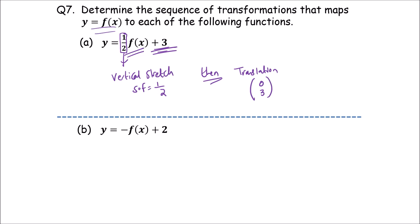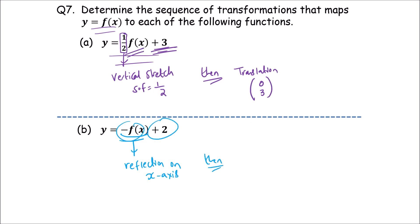Part B of question C: there are two vertical transformations. Taking f of x and putting a negative in front gives a reflection on the x-axis. Next, there is a vertical translation with translation vector (0, 2).